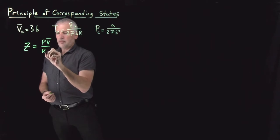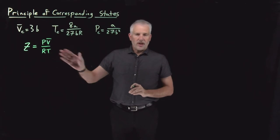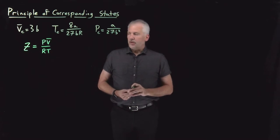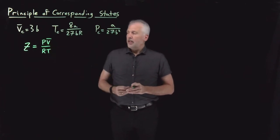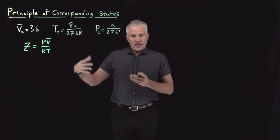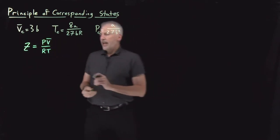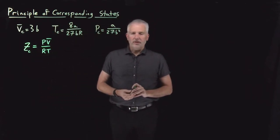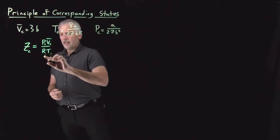If we calculate PV̄ over RT, for an ideal gas that would be 1. For a non-ideal gas it will not be exactly equal to 1 — it might be greater than 1 if the finite volume of the molecules causes the gas to occupy higher pressure than the ideal gas law would predict. It will be less than 1 if the pressure or volume is less than the ideal gas law would predict. So what we can do is ask: at the critical point, what would be the compressibility factor of a Van der Waals gas?